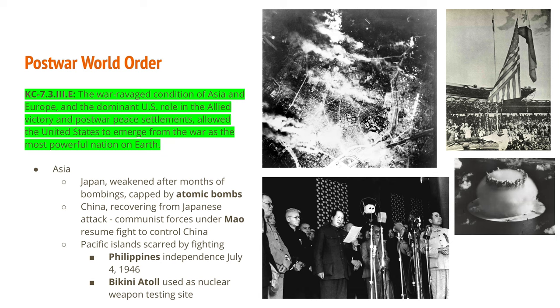In Asia, Japan had been weakened after months of bombing. Even before the atomic bombs were dropped, the city of Tokyo and other industrial centers were being bombed by B-29s and the American Air Force. The atomic bombs dropped on Hiroshima and Nagasaki caused a lot of destruction and suffering, and rebuilding would require great effort. Japan would also be placed under U.S. administration, headed by General Douglas MacArthur.